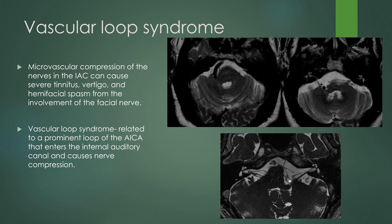Vascular loop syndromes — you can have microvascular compression of the nerves in the IAC that can cause tinnitus, vertigo, and in some cases hemifacial spasm. You can have compression of the 7th and 8th nerve complex at their origin at the level of the brainstem, or you can have a vessel extending into the IAC, usually the labyrinthine artery — a branch of the AICA — that can cause nerve compression, or pulsation in that vessel can cause the sensation of pulsatile tinnitus.